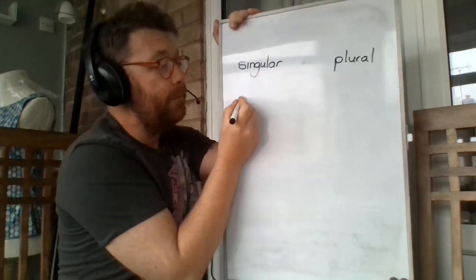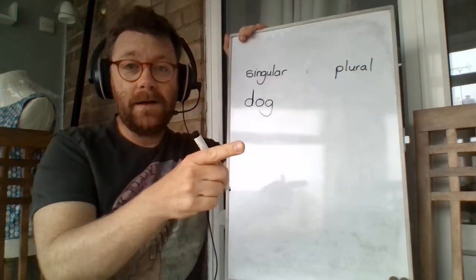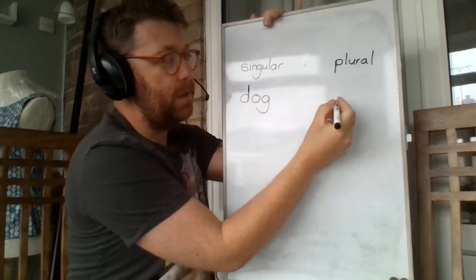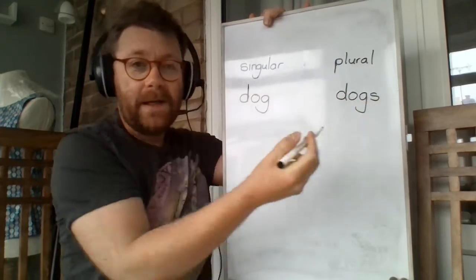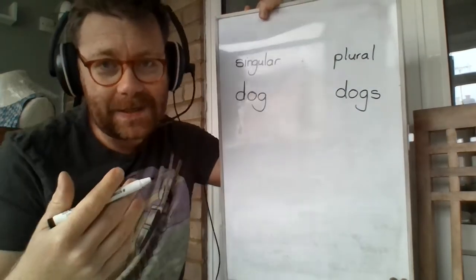So normally we just add an S if there's more than one. So I just need to keep on looking at my list here to make sure I'm teaching you the right thing. So normally if we just see one dog, we would say, oh look, there's a dog. But if we see more than one dog, we would say, oh look, there are some dogs. So can you see I've just added S? Normally you would just add S.